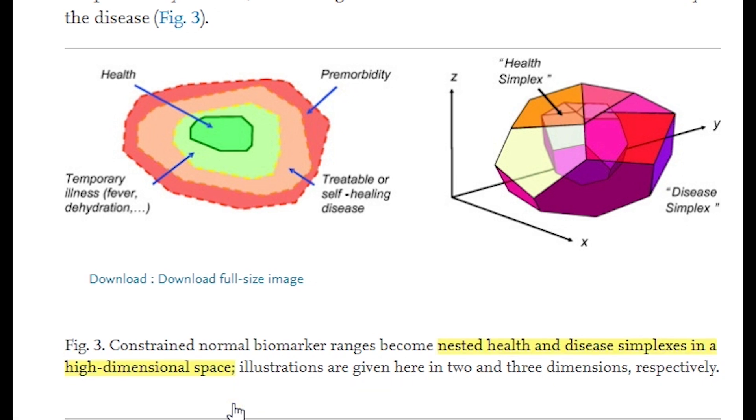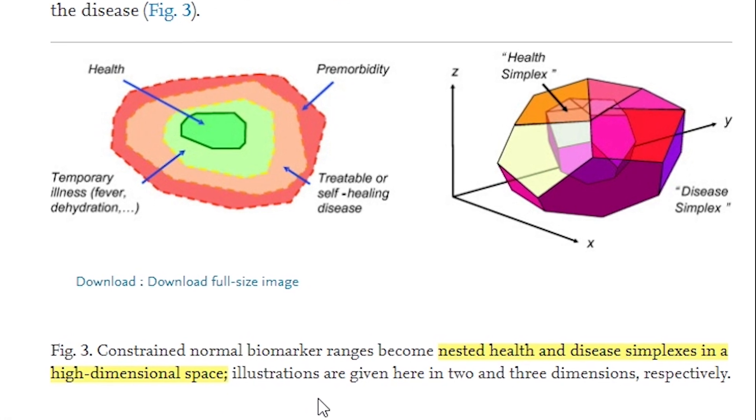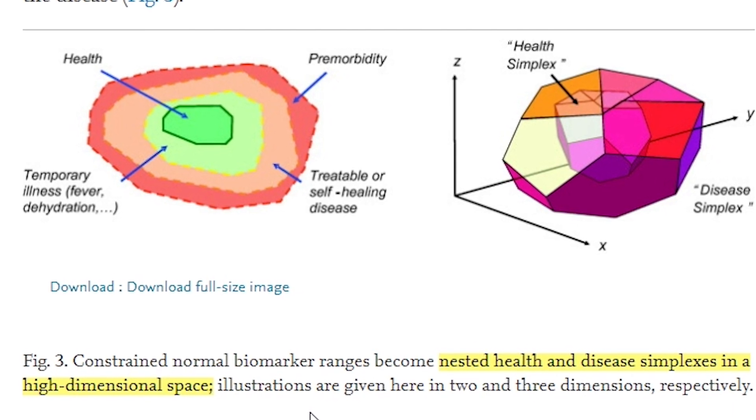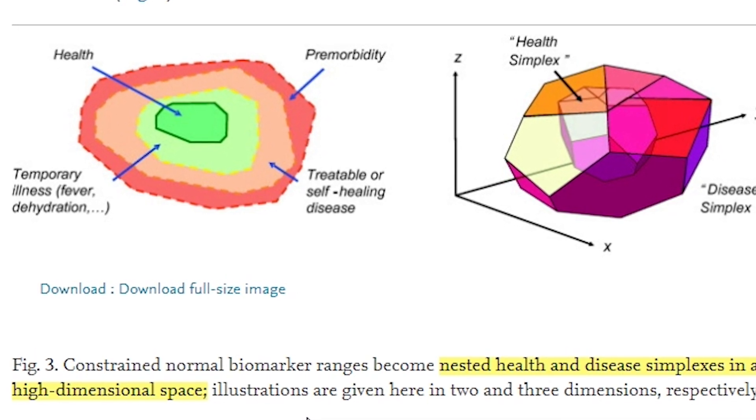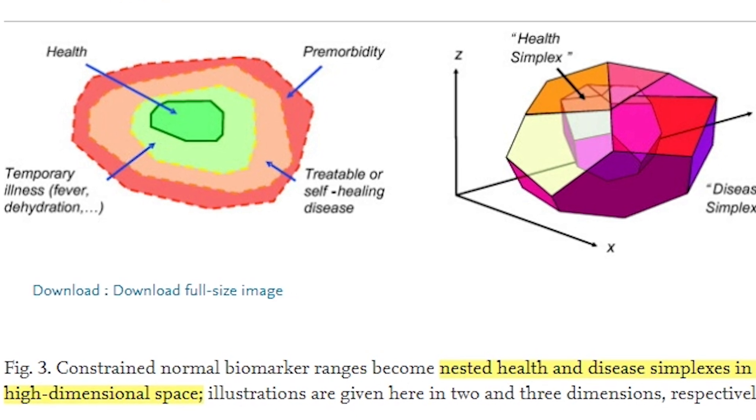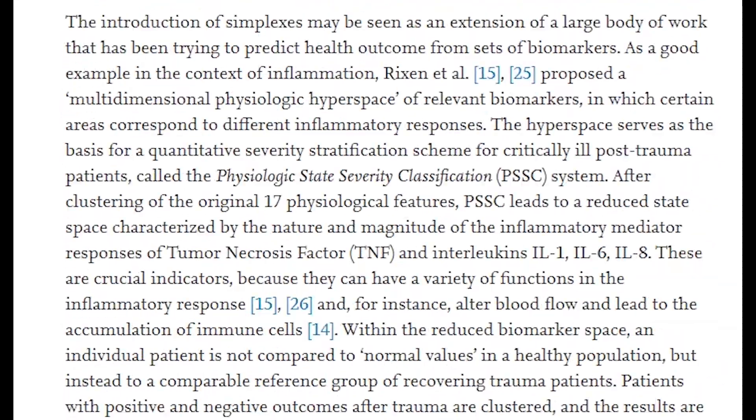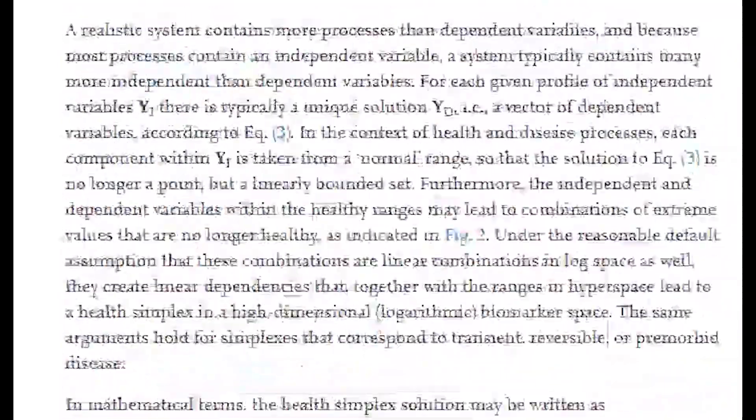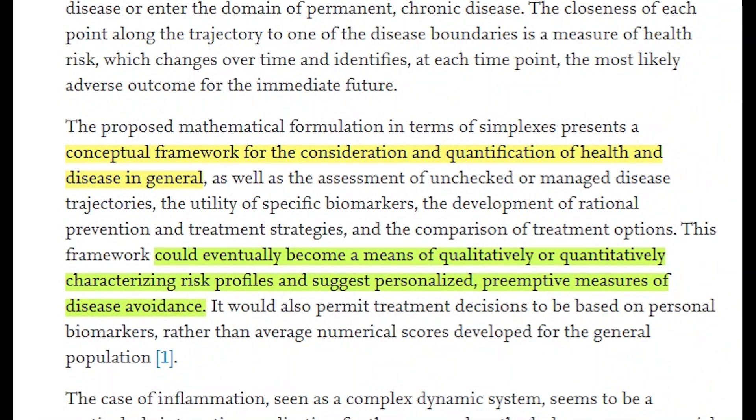So health and various disease states form nested simplexes. Some distances between the subsequent simplexes may be short, others may be much longer. And these distances could indicate the severity of a disease. And it could also be used to identify more important parameters or biomarkers that provide more value or indication for a disease risk.